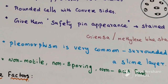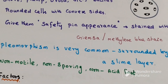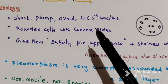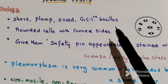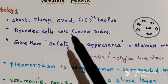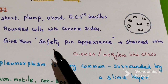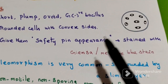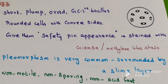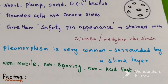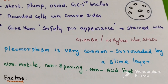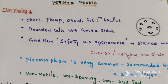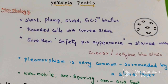They are non-motile, non-sporing, non-acid-fast bacilli. So, to summarize morphology: gram-negative bacilli, rounded cells with convex sides giving safety pin appearance in Giemsa or methylene blue staining. Pleomorphism is very common, non-motile, non-sporing, non-acid-fast bacilli.